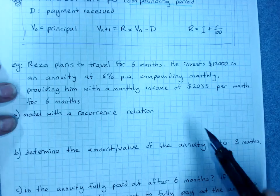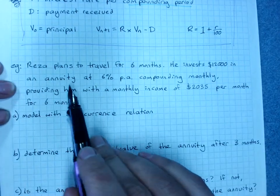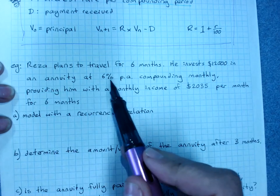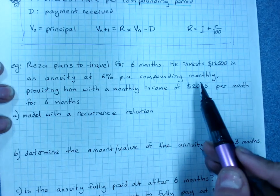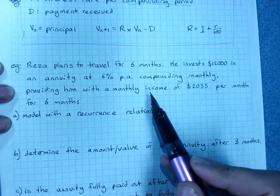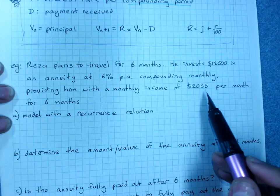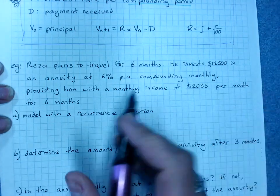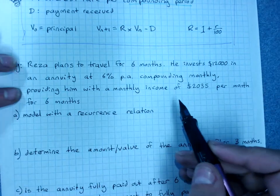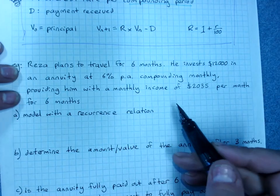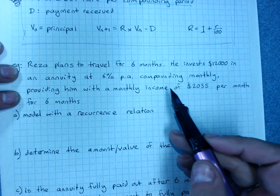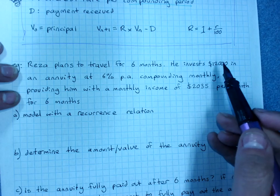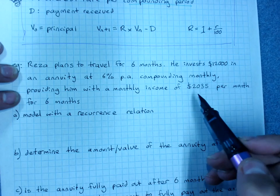So for example, Reza plans to travel for six months. He invests $12,000 in an annuity at 6% per annum compounding monthly, providing him with a monthly income of $2,035 per month for six months. And this is actually quite accurate. People will travel and have saved up in order to do so and set that to pay them a fixed amount per month.